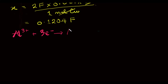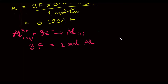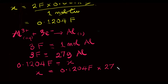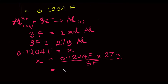From the reduction half equation for aluminium, three Faradays will deposit one mole of aluminium. The mass of one mole of aluminium is 27 grams, which means that three Faradays will deposit 27 grams of aluminium. Therefore, 0.1204 Faradays will deposit x grams. Solving this gives us 1.08 grams of aluminium.